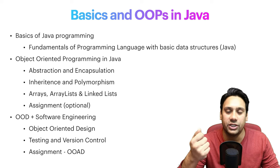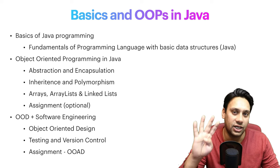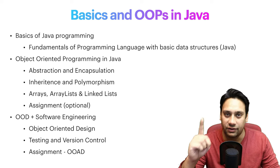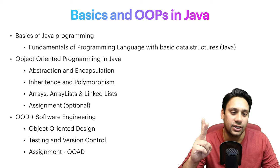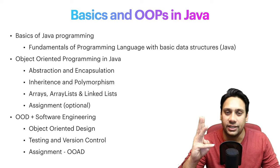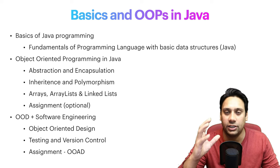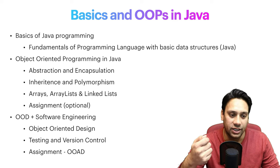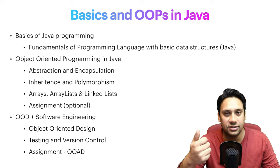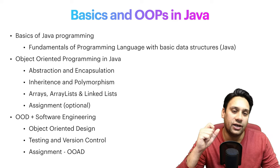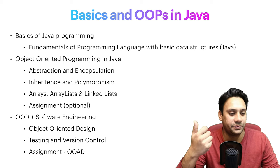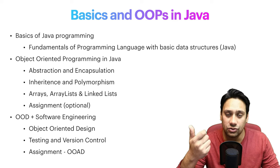The second one will be object-oriented programming. Here we have four things covered: the first one will be abstraction, the second one will be encapsulation, the third one will be inheritance, and the fourth one will be polymorphism. A part of this will also discuss about arrays, ArrayList, and LinkedList.